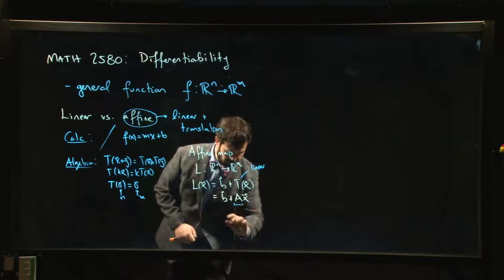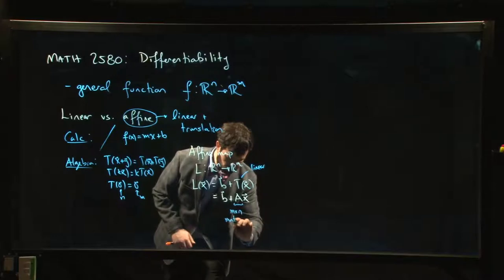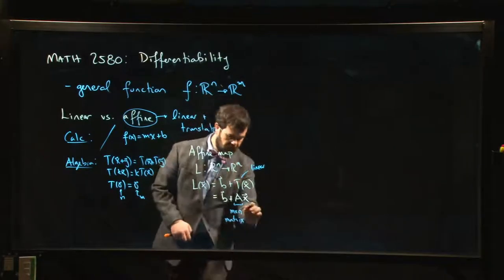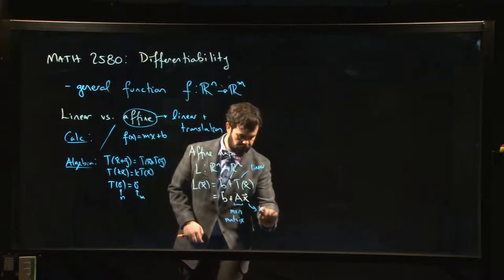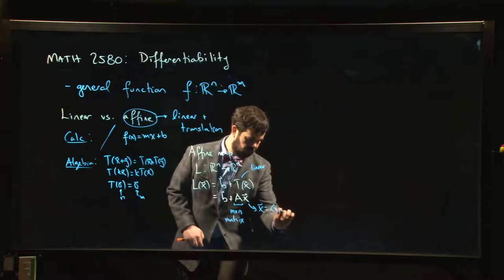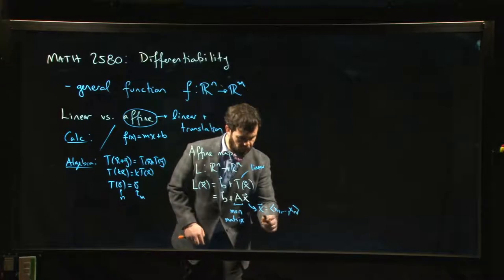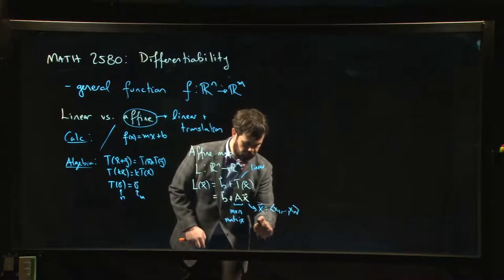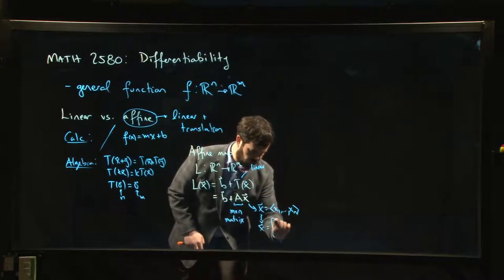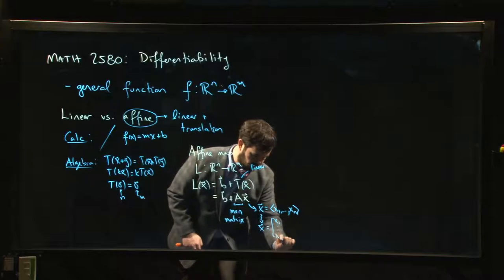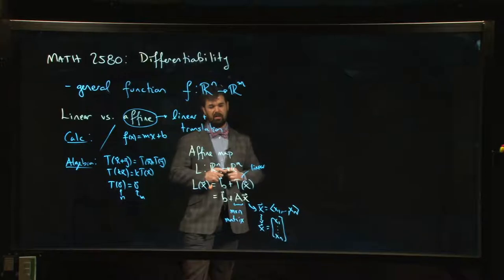We're thinking of A as an m by n matrix, and x here—the trouble is, we like to think of x with angle brackets, but maybe here we should write x as a column vector, x_1 down to x_n, just so that the matrix product is defined.